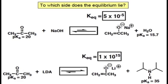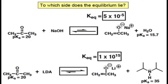When we look at the reaction of LDA and acetone, again we compare the two conjugate acids. Acetone has a pKa of 20 and isopropyl amine has a pKa of 35. Therefore equilibrium lies to the right in the formation of isopropyl amine and the enolate anion.